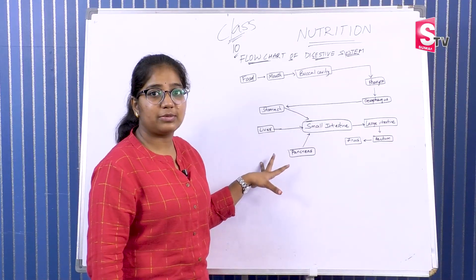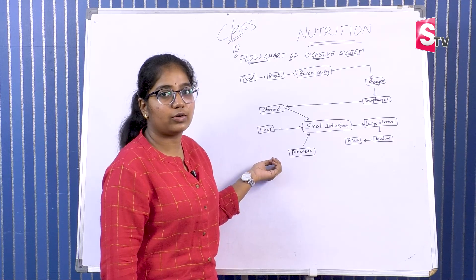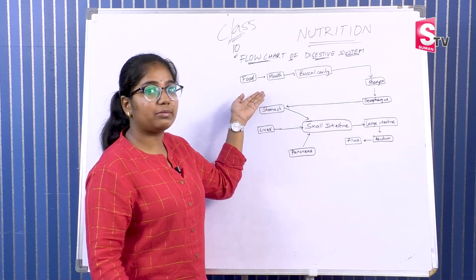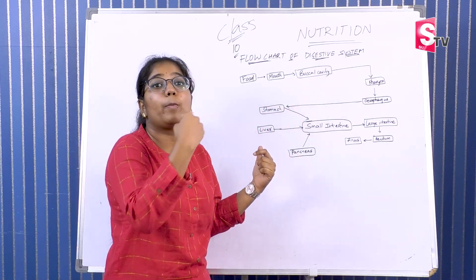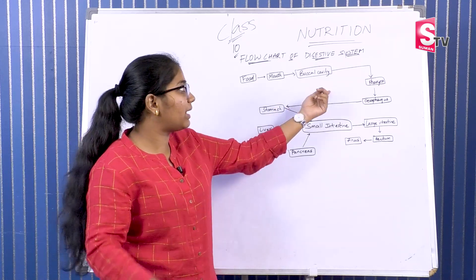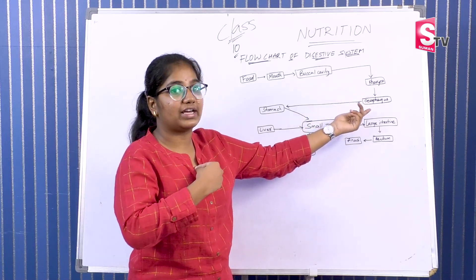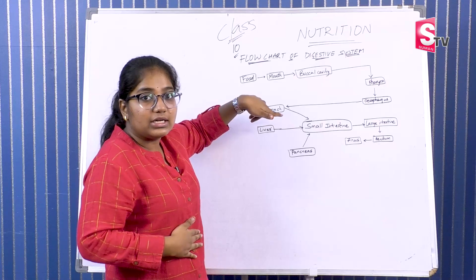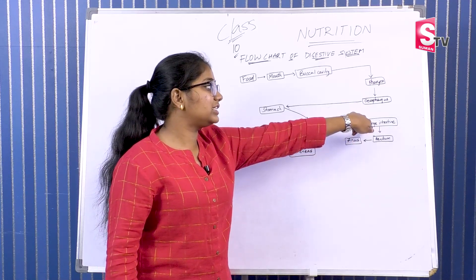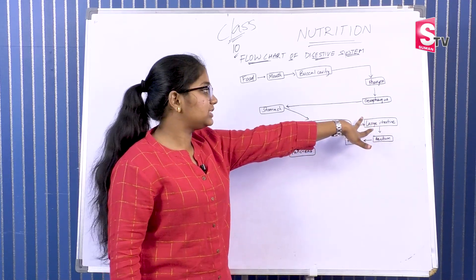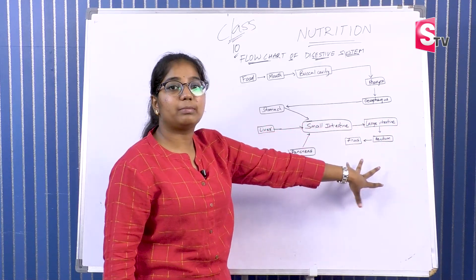The digestive system flowchart is very important. Food enters the mouth (buccal cavity), then goes to the pharynx, esophagus, stomach, small intestine, large intestine, rectum, and anus. The anus is where excretion occurs. The liver and pancreas connect to the small intestine.